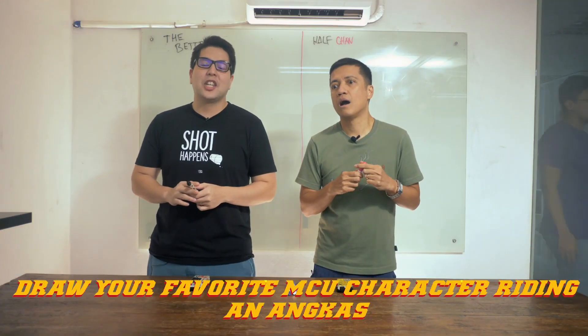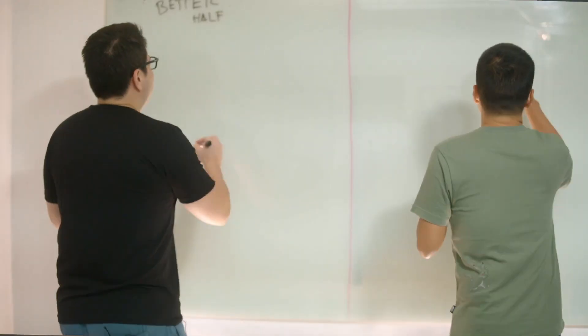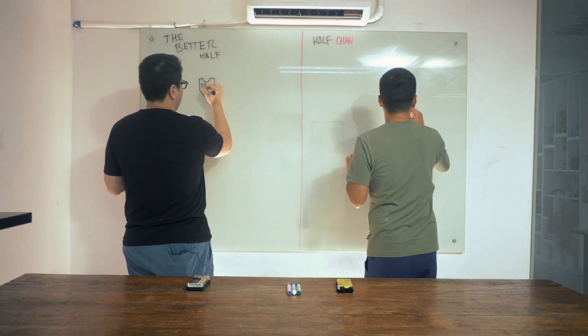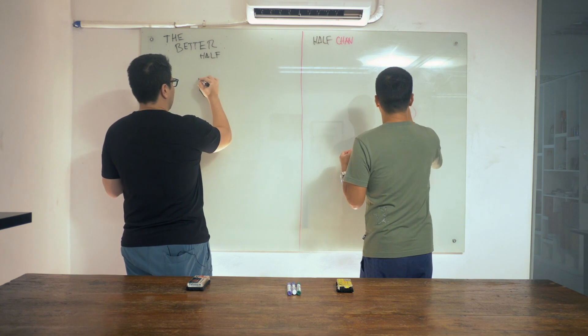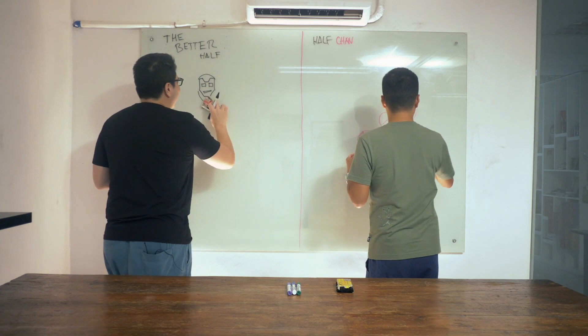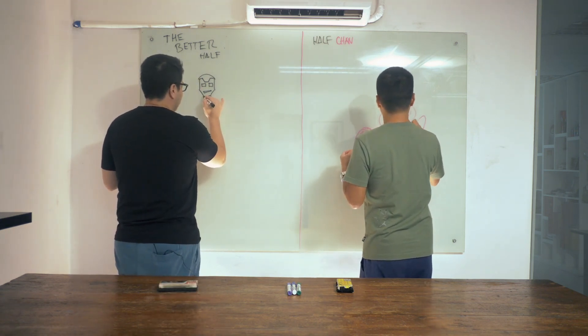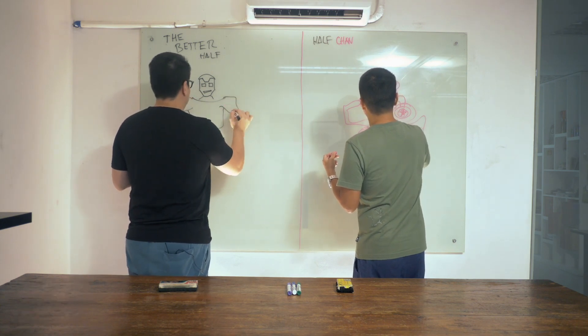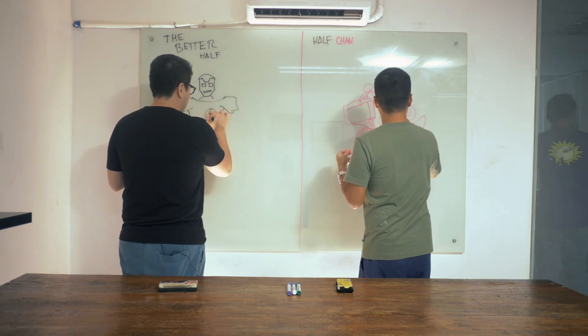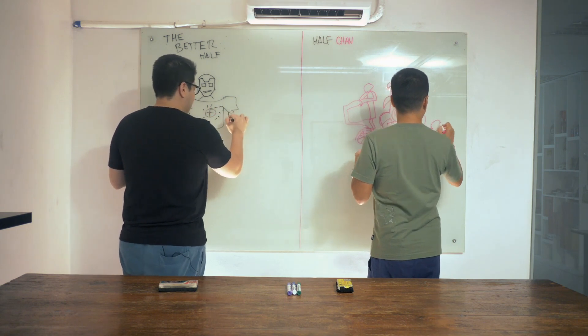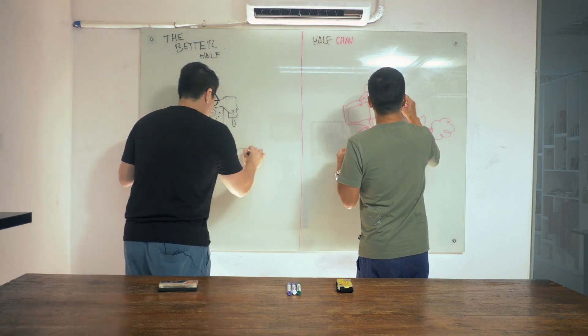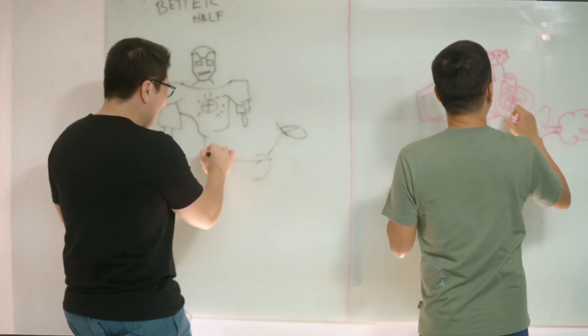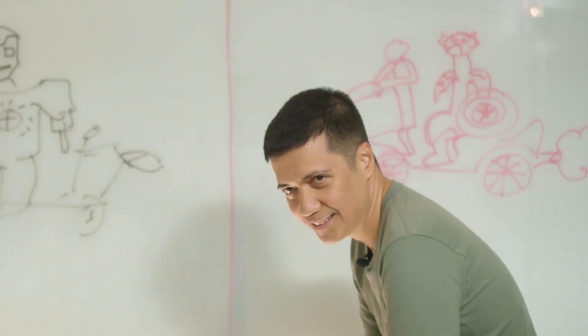Next category: draw my favorite MCU character riding Angkas. All right, three, two, one. Oh lord. Ang hirap na i-drawing nung buka niya. Oh lordy crap. Oh lordy, bakit siya nagka double chin. Oh my god. Come on! So much pressure!